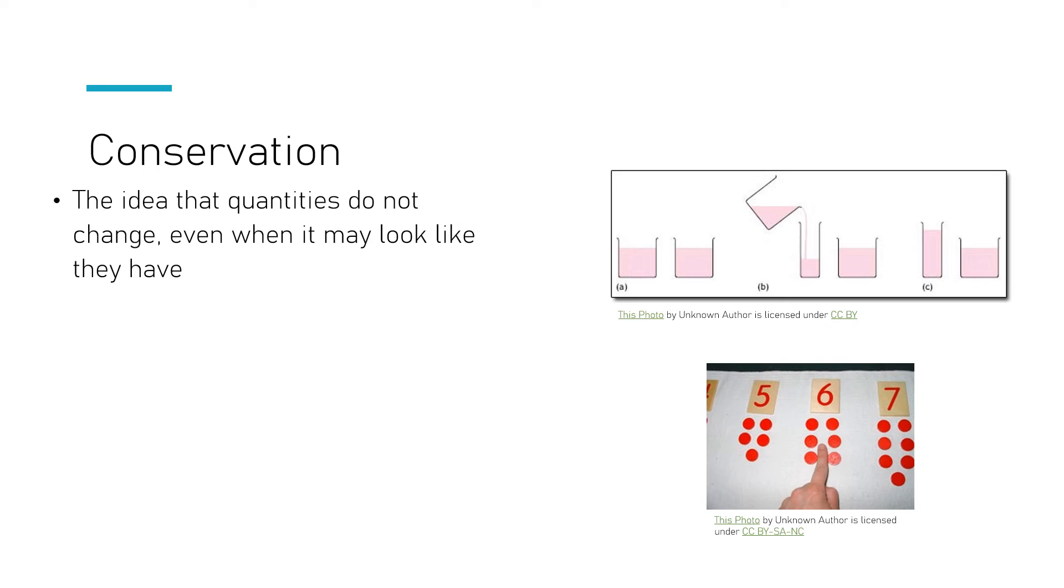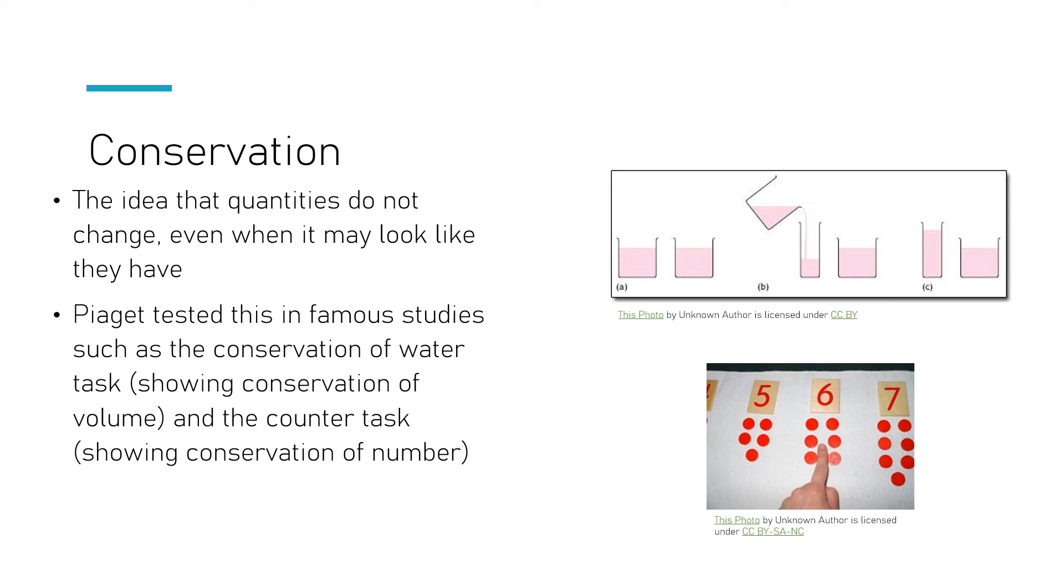So what conservation is is the idea that quantities do not change even though they may look like they have. Piaget said that looking at conservation, looking at quantities, volume and counting, can give us an indication of how children are developing in their thinking and cognitive development. It was one of his more famous studies, his conservation task studies as they were known.